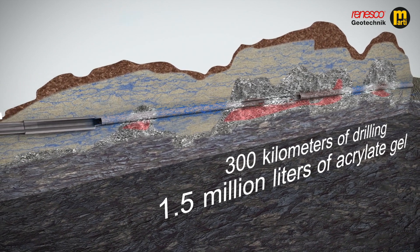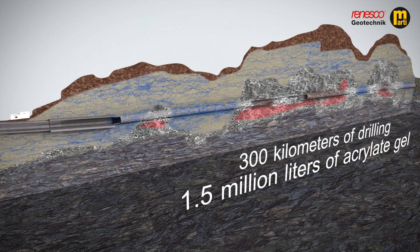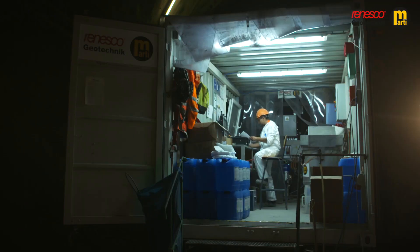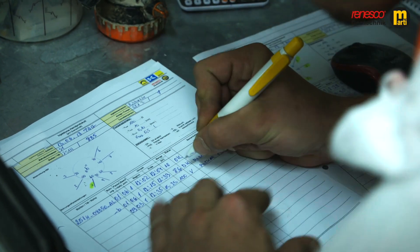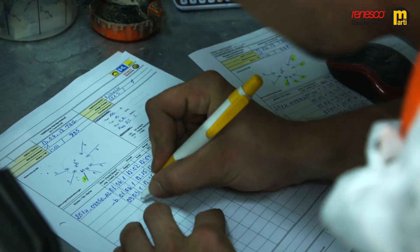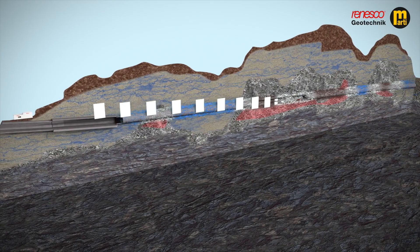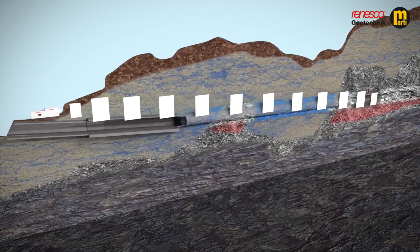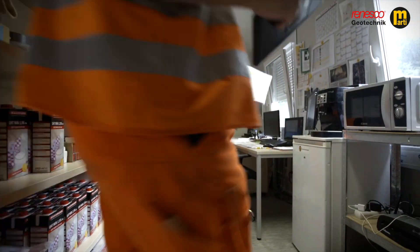As it is not possible to see the injections in the rock, the 130,000 injections have to be carried out neatly and must be documented exactly. The conventional, purely manual way, with up to 500 injections per day, meant a lot of administration work and low availability of data.